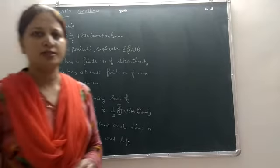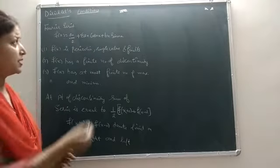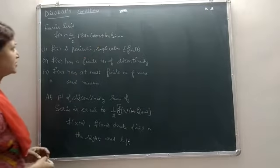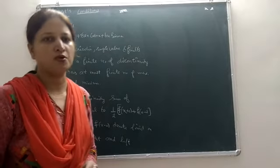As we have discussed, Fourier series is given as f(x) equals a0 upon 2 plus summation an cos nx plus bn sin nx, where a0, an, and bn are constants.